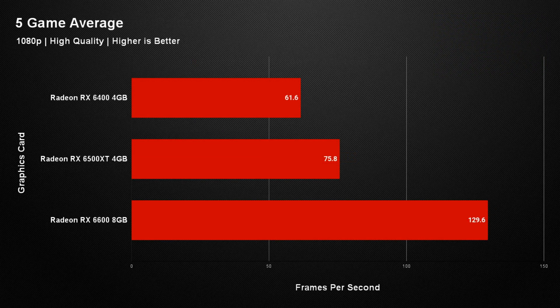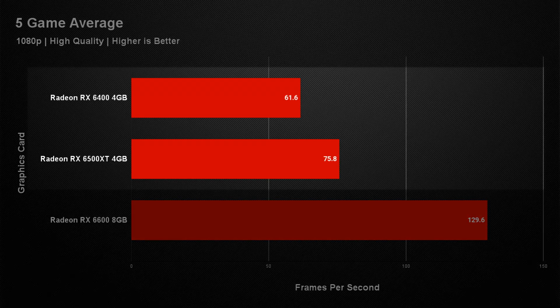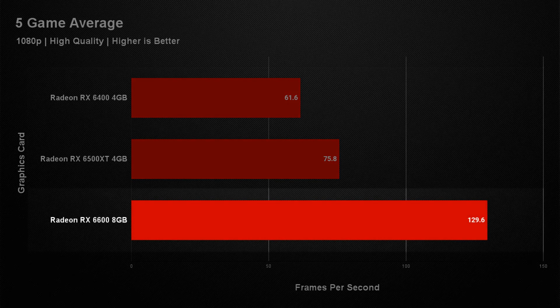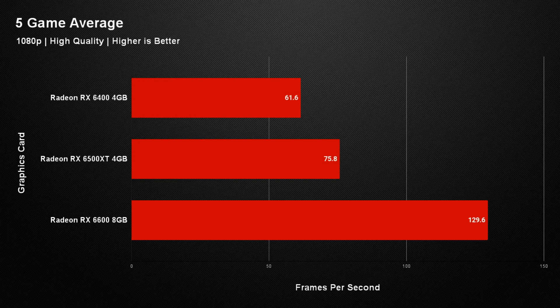From these results you can clearly see there is a world of difference between the two lower-end cards and the RX 6600. This may be down to a number of factors — from the amount of VRAM the cards have to the PCIe kneecapping the lower-end cards received — but the question is whether this performance difference can be justified when it comes to price.